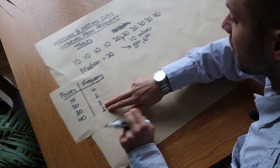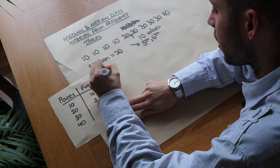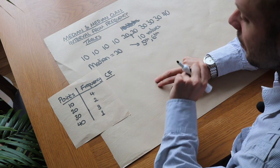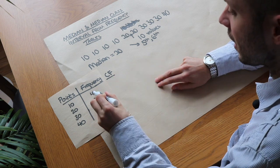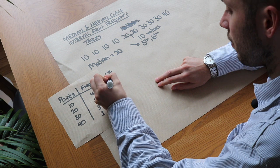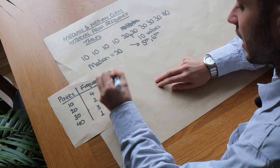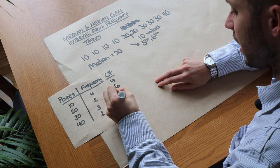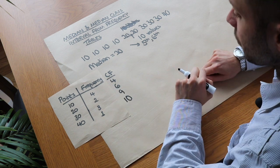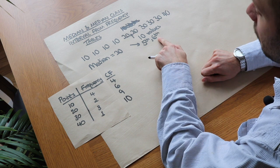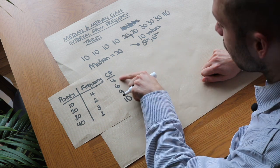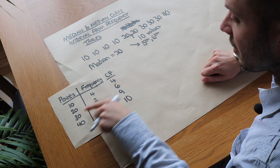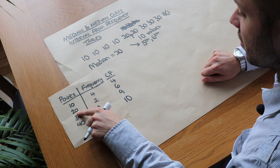What we can do is add an extra cumulative frequency column. Cumulative frequency just means a running total. The running total up to the first row is four items, up to the second row is six, up to the third is nine, and up to the fourth is ten. So we can see more easily where the fifth and sixth items lie — they don't lie within the first four but do lie within the first six, so the median is 20 points.